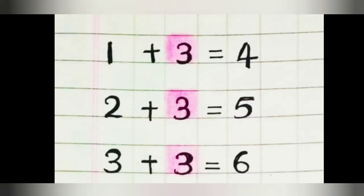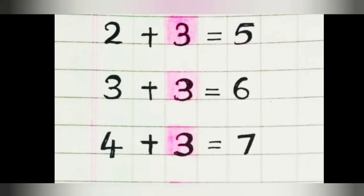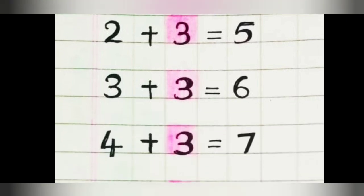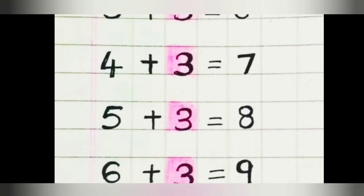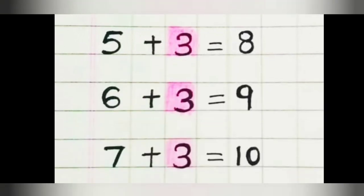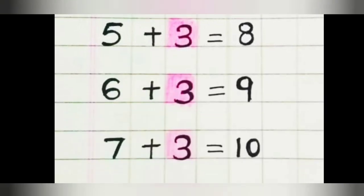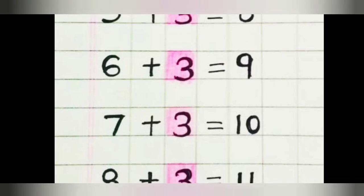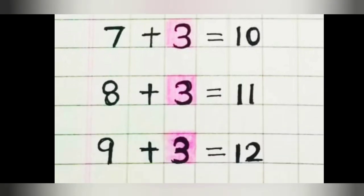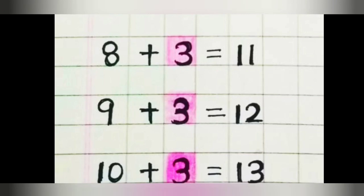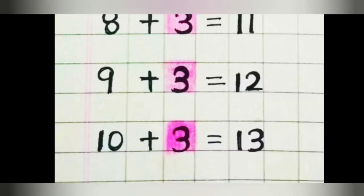One plus three is four. Two plus three is five. Three plus three is six. Four plus three is seven. Five plus three is eight. Six plus three is nine. Seven plus three is ten. Eight plus three is eleven. Nine plus three is twelve. Ten plus three is thirteen.